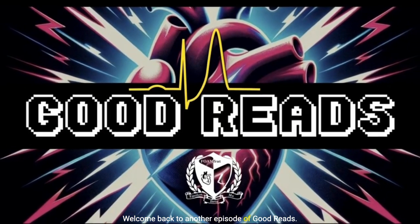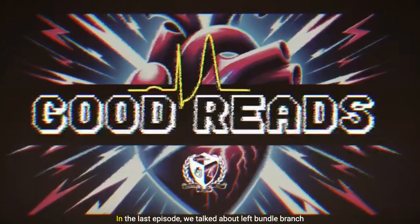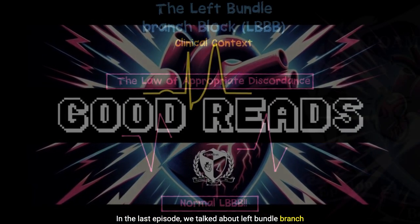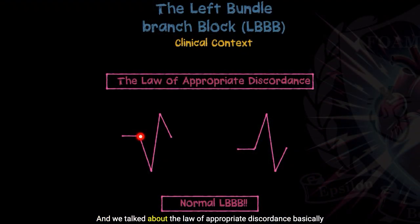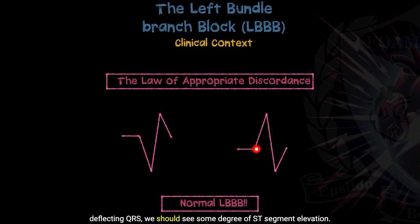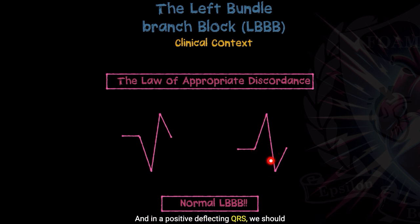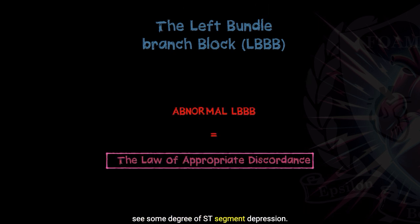Welcome back to another episode of Goodreads. In the last episode, we talked about left bundle branch blocks and what's a normal left bundle branch block, and we talked about the law of appropriate discordance. It basically means that in a left bundle branch block, if we have a negative deflecting QRS, we should see some degree of ST segment elevation. That's normal. And in a positive deflecting QRS, we should see some degree of ST segment depression.